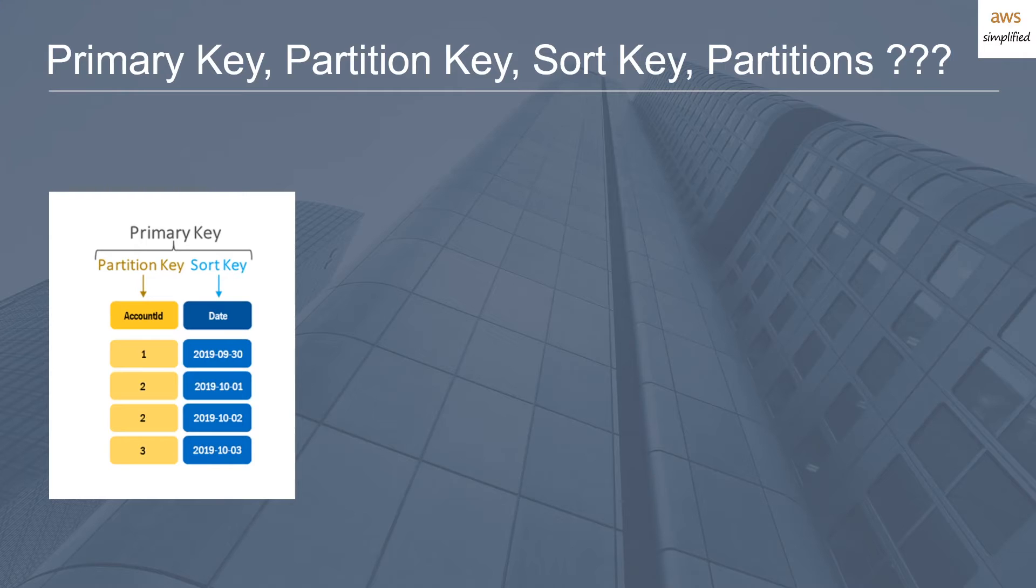Now when you specify the sort key, the combination of the partition key and the sort key must be globally unique. In this example here, if we have an account ID as the partition key, the combination of these two things must be globally unique. And that's what constitutes your primary key - the combination of these two unique values. If we look at this example here, we have two records with the same partition key. However, the sort key is different for each of them, so they are technically globally unique.